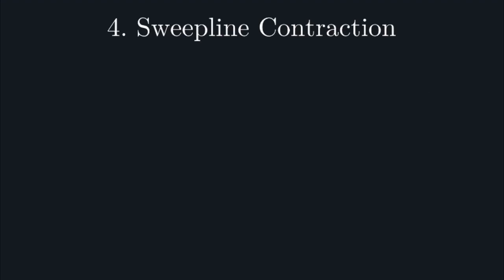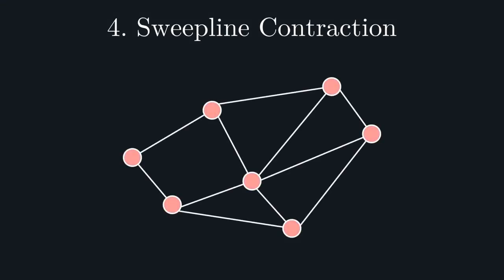So, what does a sweep-line-based contraction algorithm look like? We start by laying out the 2D tensor network in the plane, and we're going to sweep across this network, updating whenever we hit a tensor. When we hit the first tensor, we split this into an MPS.